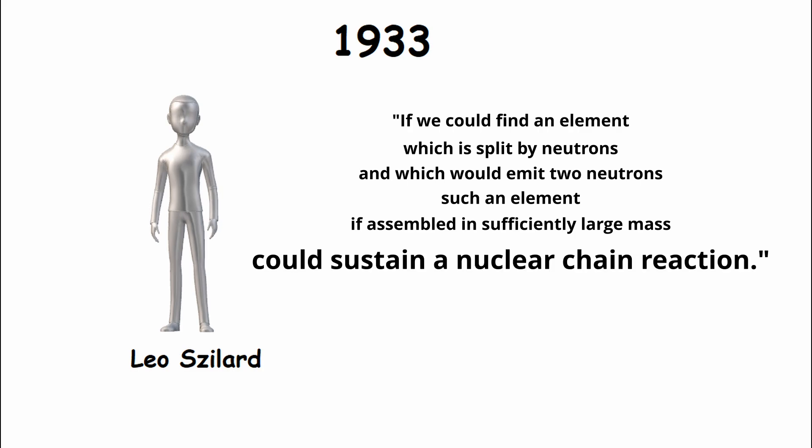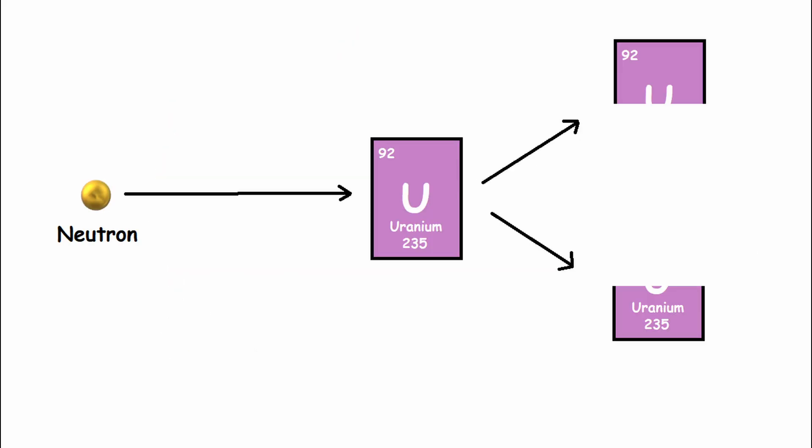Thus began the search for an element that satisfied these conditions. It was then soon discovered that uranium-235, a specific isotope of the element uranium, could be split by neutrons, and given that it's highly radioactive, meaning it spontaneously emits lots of neutrons, it was the perfect candidate.